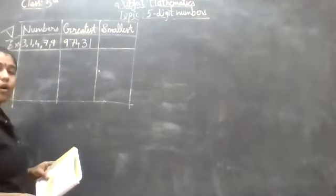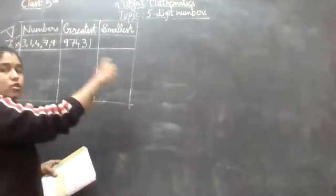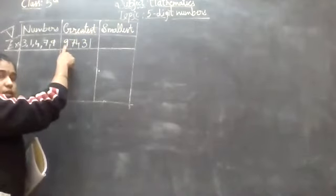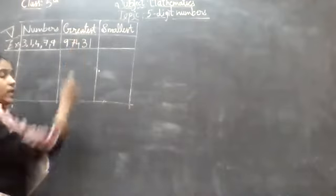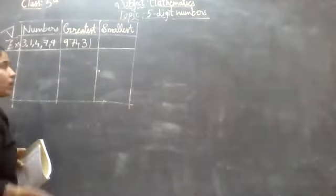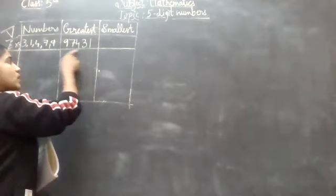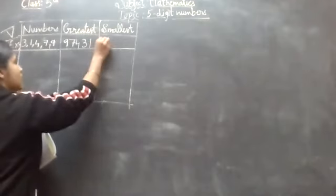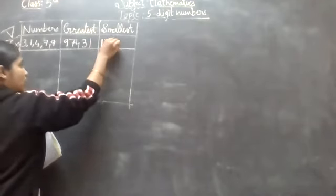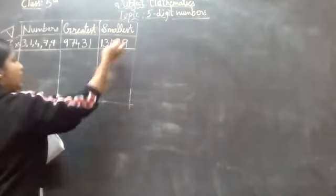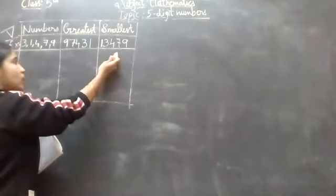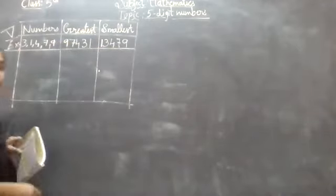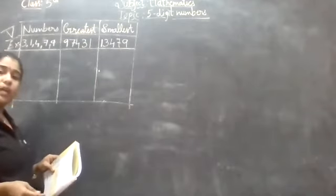We are going to write in descending order, that means bigger to smaller number to get the greatest number. Bigger number is nine — you start from the bigger number to the smaller number to write the greatest number. For the smallest number, just the opposite: that is ascending order, small to big. So from one to nine. That's the example I have given for you.